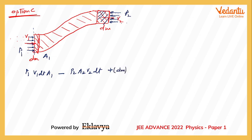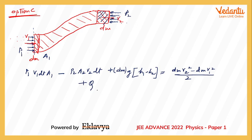Work done by gravity is dm·g·(h1 − h2). In the standard derivation, the sum of these equals the change in kinetic energy. However, if heat is also supplied to the fluid, we must add that too. The total energy input — from pressure work, gravity, and heat — leads to two types of changes: an increase in kinetic energy and an increase in internal energy of the fluid.